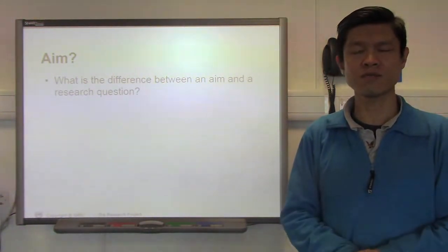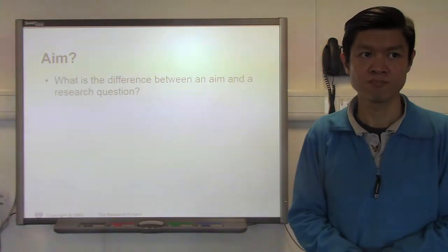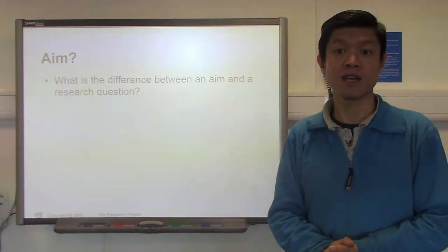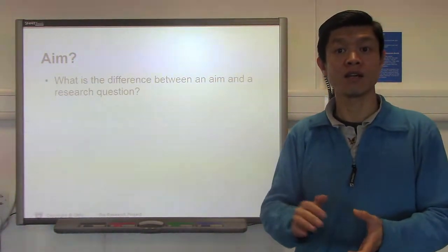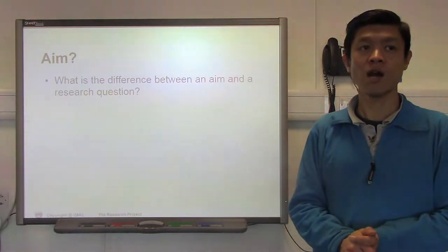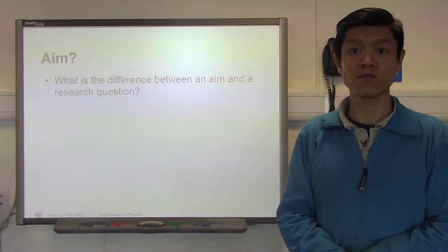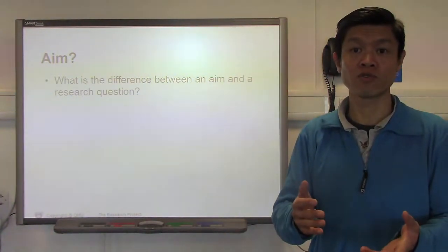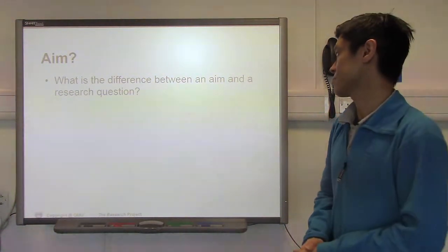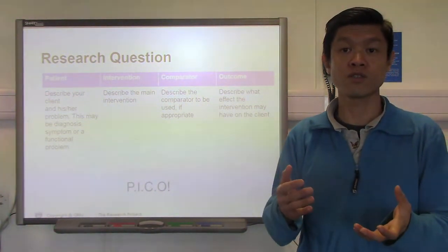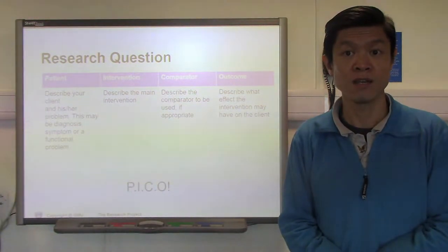A lot of students ask what's the difference between a research aim and a research question. Actually, both of them are fairly similar. The only difference is that the research aim is stated as a problem statement, and the research question is stated as a question. I would recommend that you state your systematic review question as a research question rather than research aims. Research aims are perhaps much more appropriate for some other types of studies, for example qualitative research.